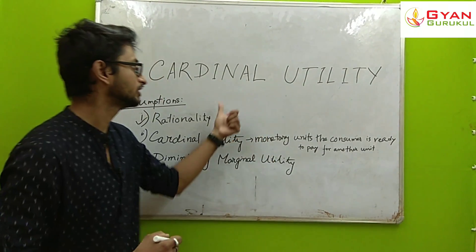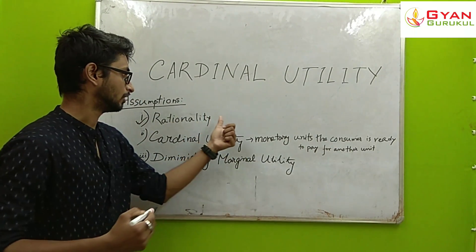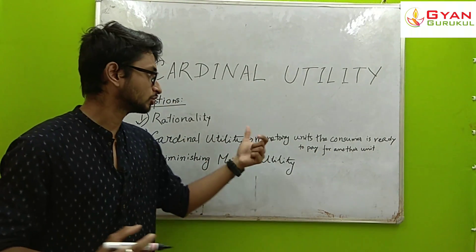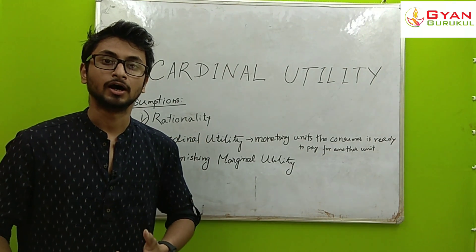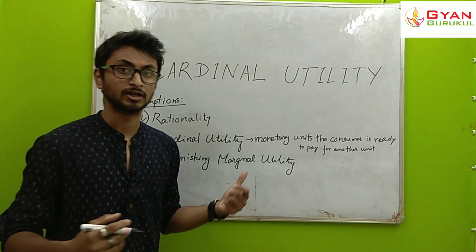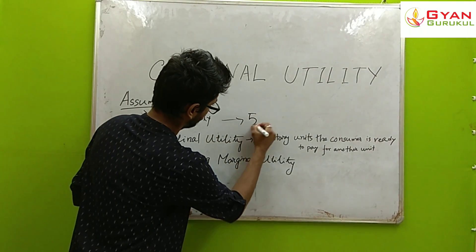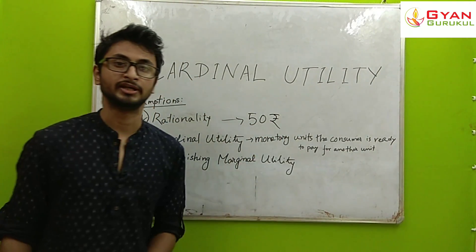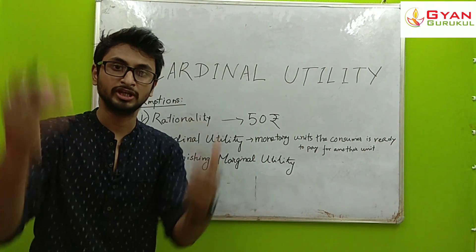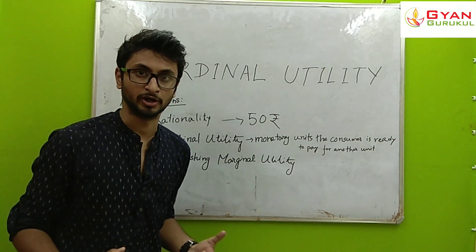First, there is the assumption of rationality. Rationality means the consumer aims to maximize utility subject to a budget constraint. For example, suppose a consumer has a budget of 50 rupees and there are two commodities, X and Y. The consumer will allocate spending on these commodities in a way that maximizes utility within that budget of 50 rupees.